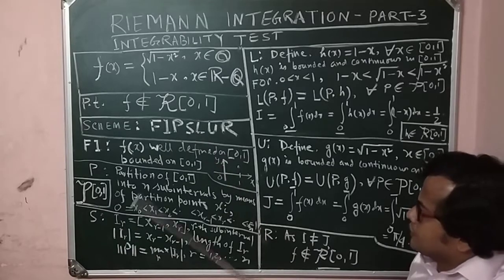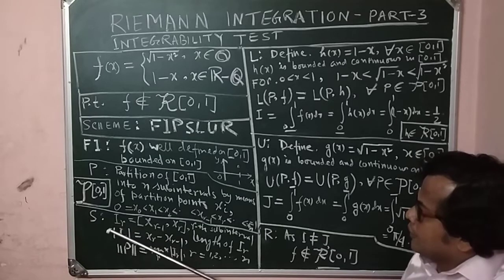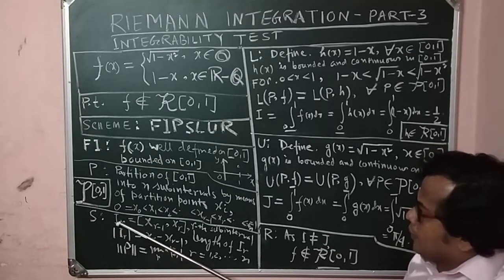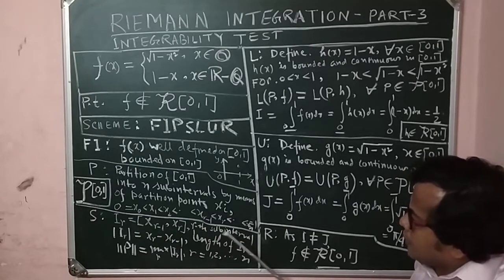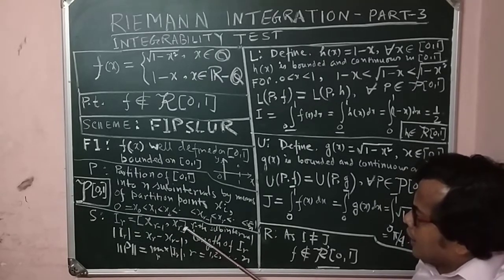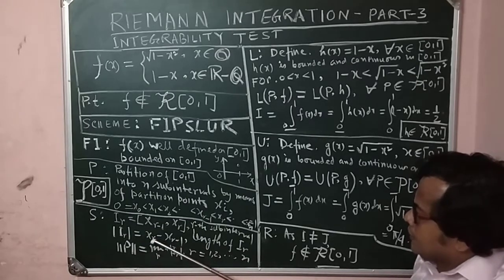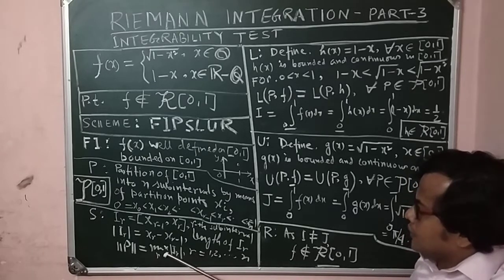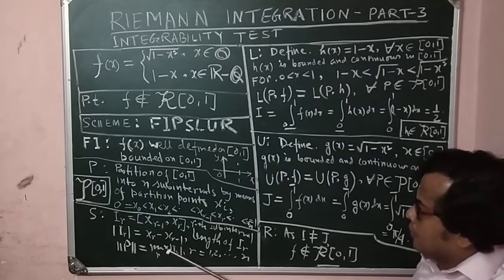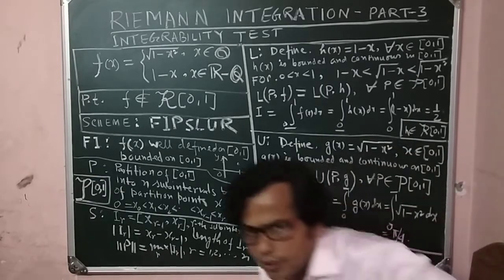Then comes S. S is the sub-interval part I mentioned in part 1. I_r bar equals the rth sub-interval [x_{r-1}, x_r]. Mod I_r equals the length of the rth sub-interval, x_r - x_{r-1}. And norm of P equals maximum of these I_r's, that is the maximum of the sub-interval lengths.